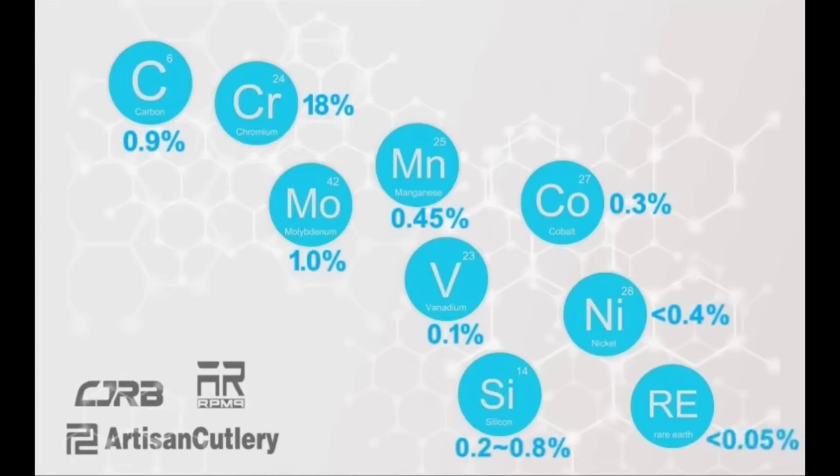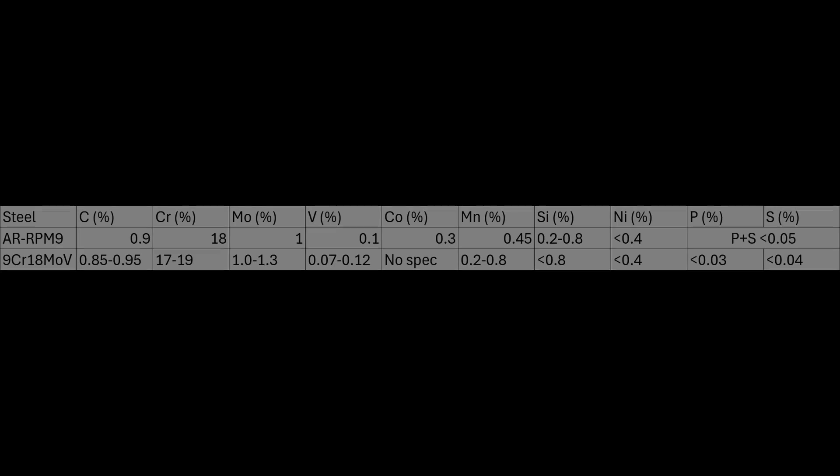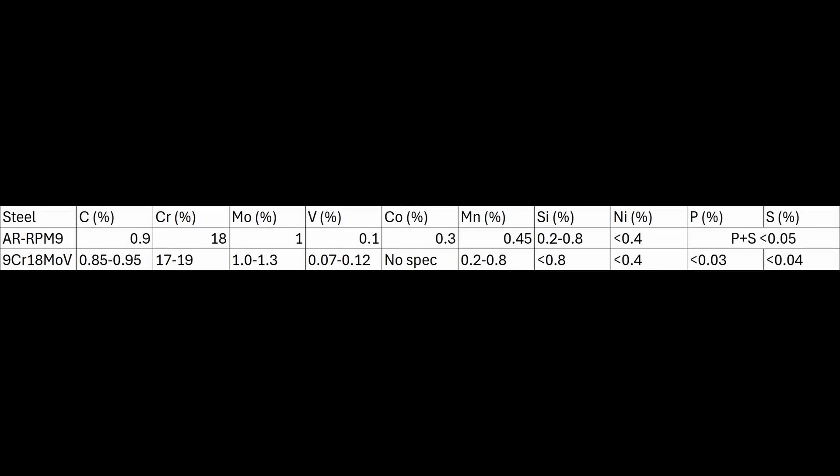And they said that it was a maximum for phosphorus and sulfur. So again, not an intentional addition. That makes sense because phosphorus and sulfur are rarely added. Like sulfur can be added to improve machinability, but it doesn't help properties. It can make them worse, especially toughness. Normally, phosphorus and sulfur are listed as maximums on a spec sheet because we don't want them. So without the rare earth element that it turns out was not in the steel, we're down to seven elements. So it should be called AR-RPM7, not even AR-RPM9.